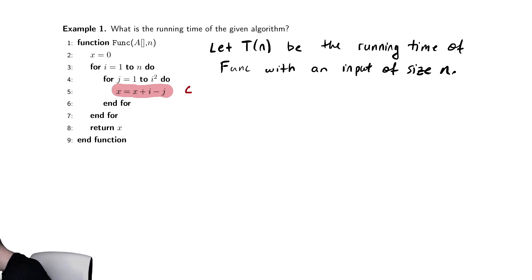So T(n) is equal to - the outermost for loop gets directly translated into a summation. So we write that as the sum from i equals one to n. And then the second for loop, we also directly translate as a summation, and write that as the sum from one to i squared. And then the line of code, which is nested inside of both of those for loops, takes constant time, that c that we had before.